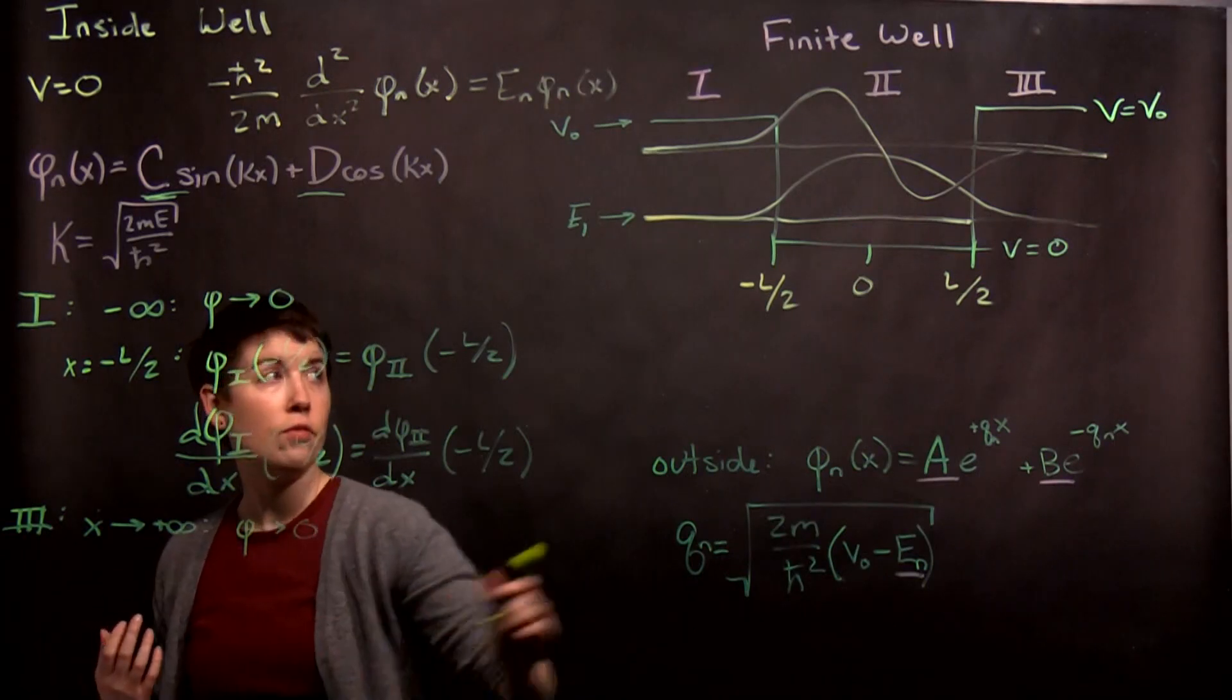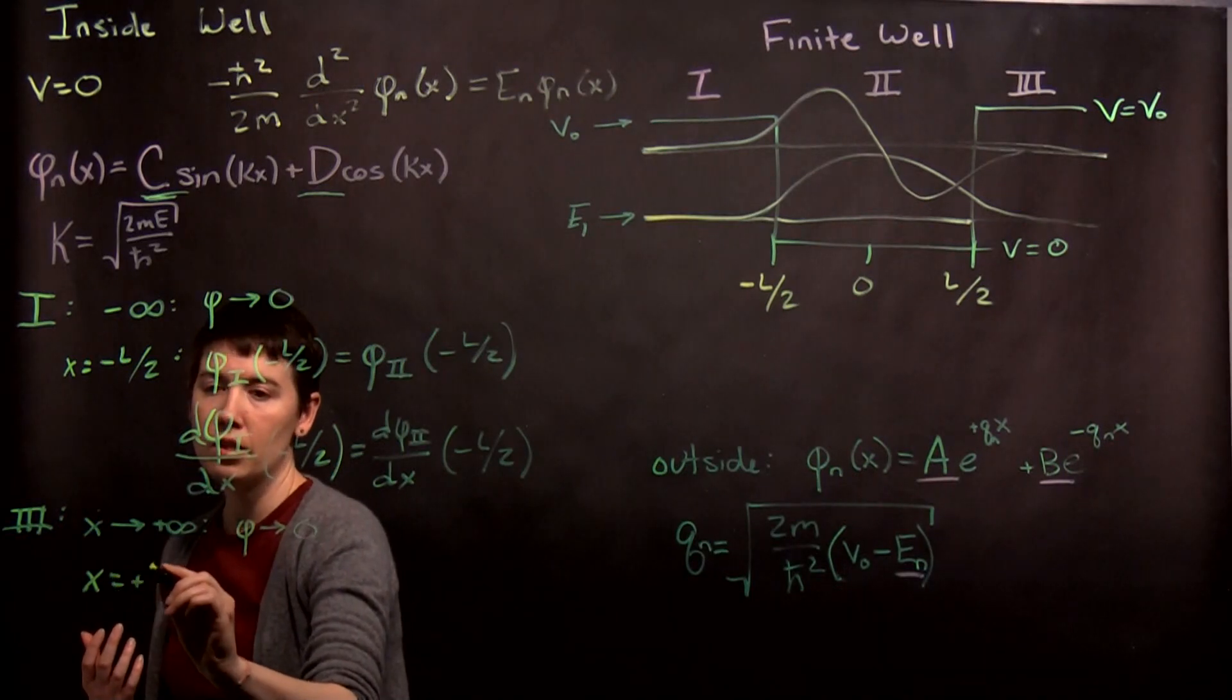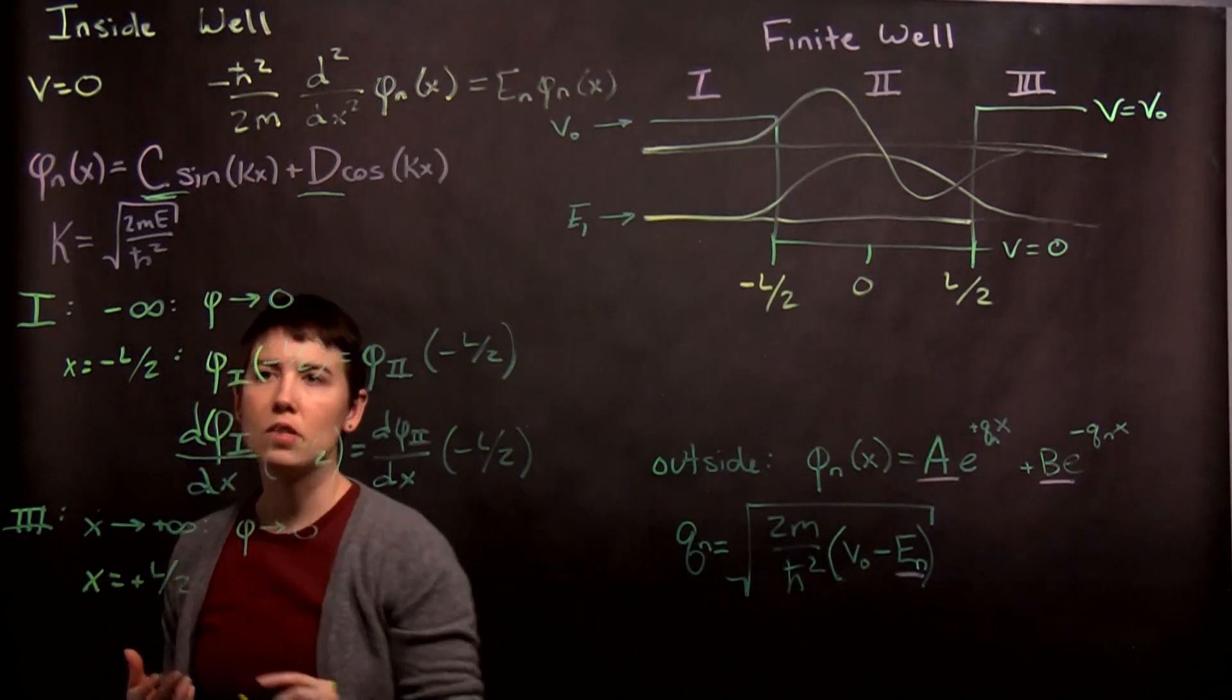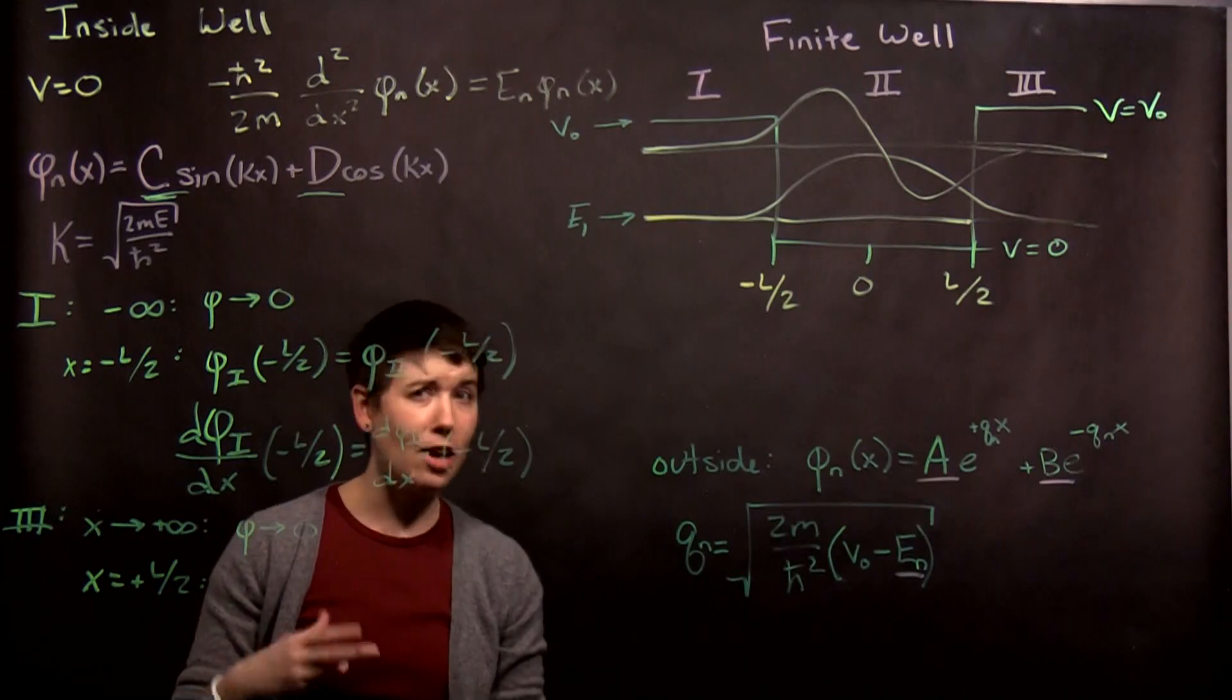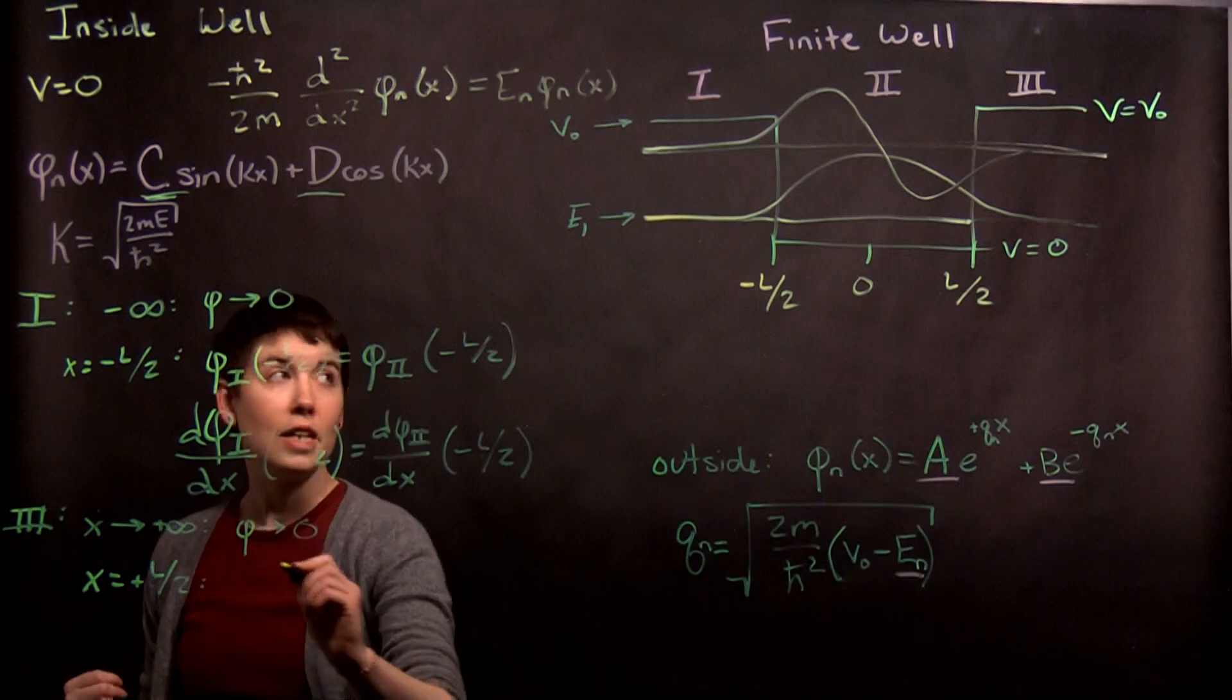We again then have the other edge. So, if x is equal to positive l over two, and obviously if the book is using plus or minus a, plus or minus a over two, it all works out the same. This is just the notation I'm using here.